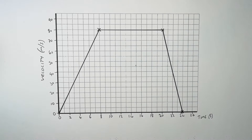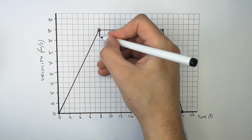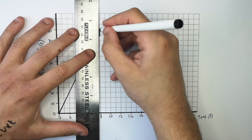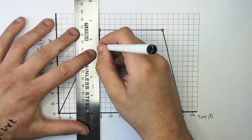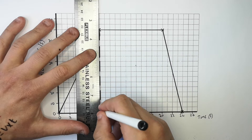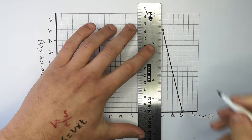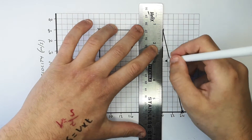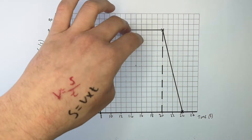To calculate the distance a car has travelled using a velocity-time graph, you must calculate the area underneath the graph. You must first identify where you can separate the graph into triangles, rectangles, or squares. I've split my graph into two triangles and one rectangle.